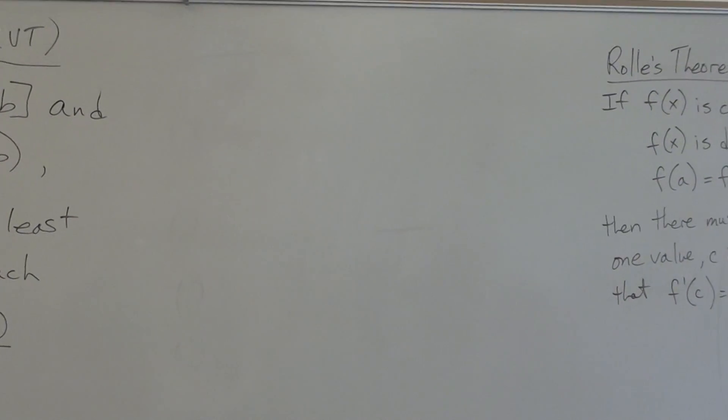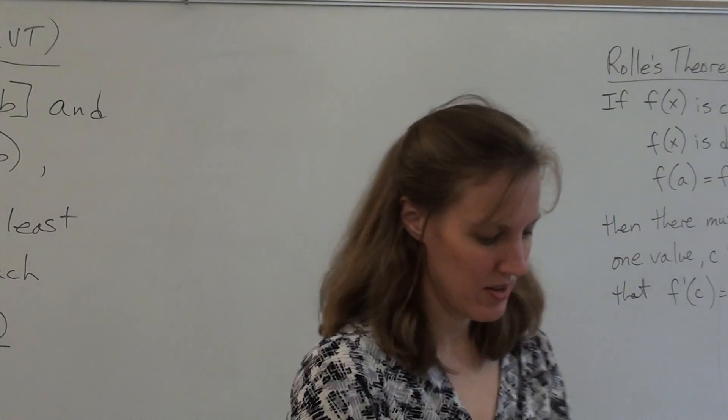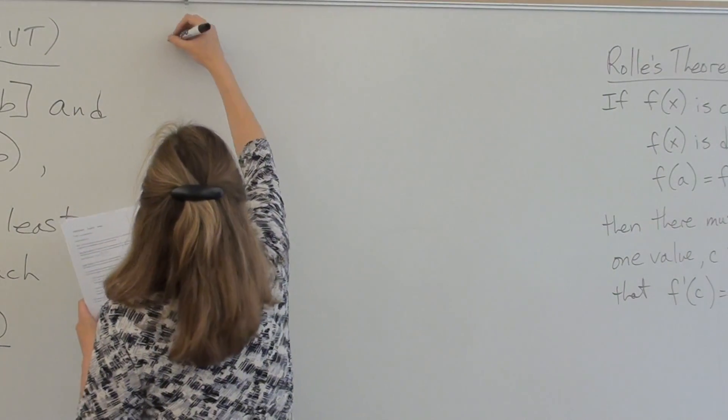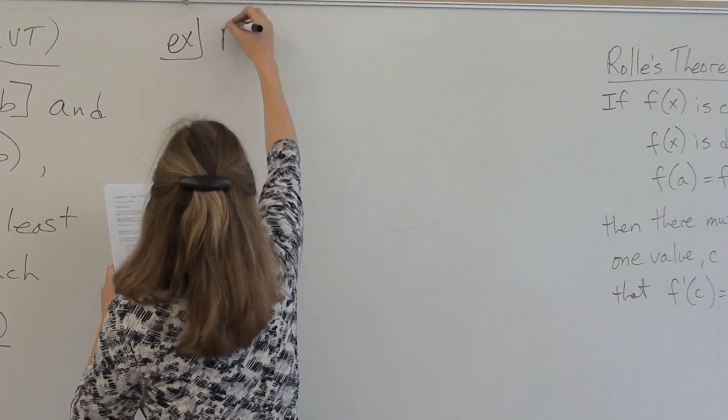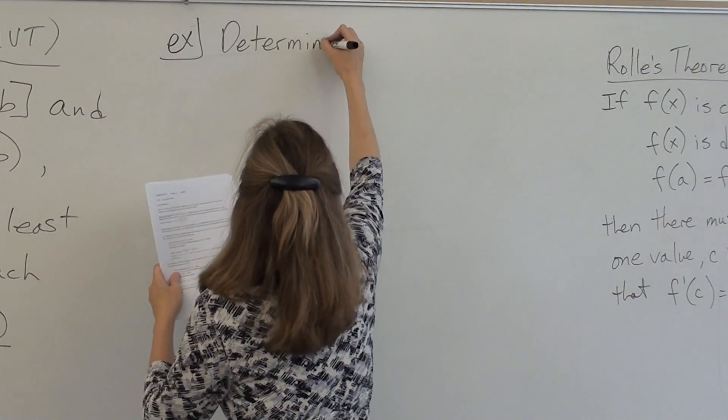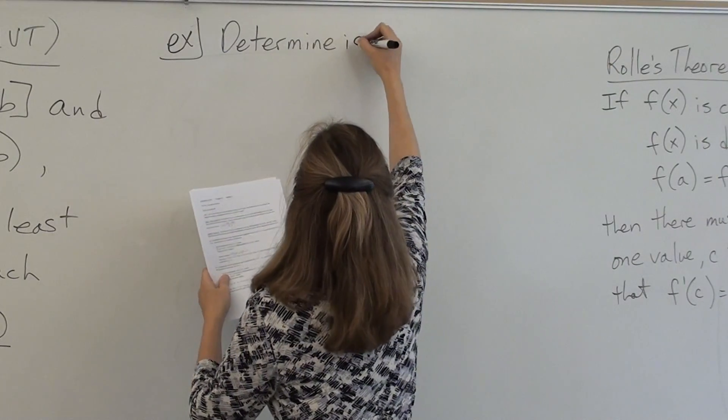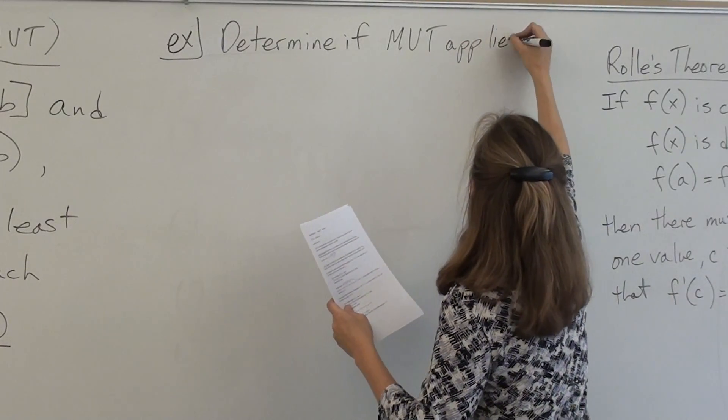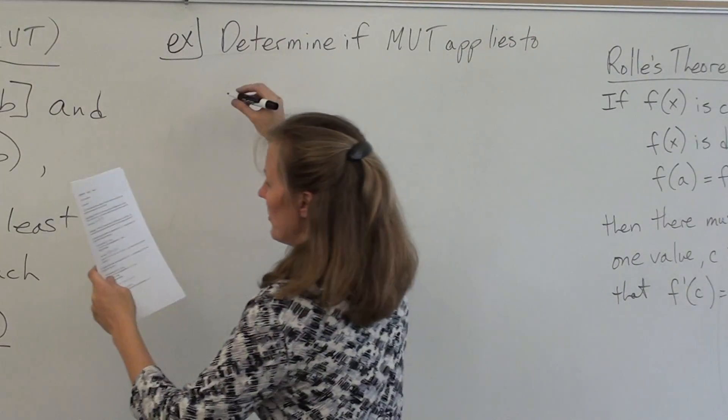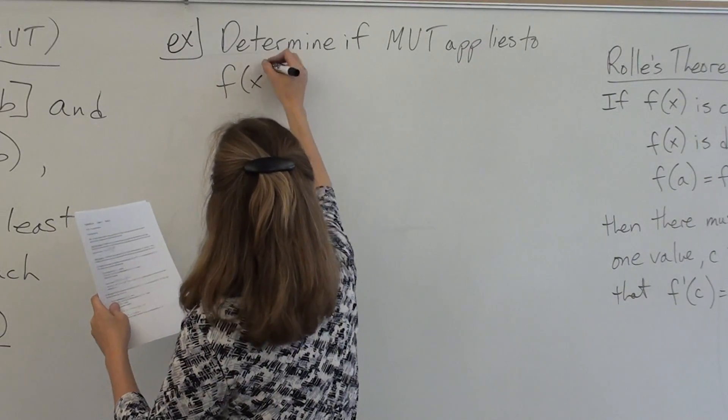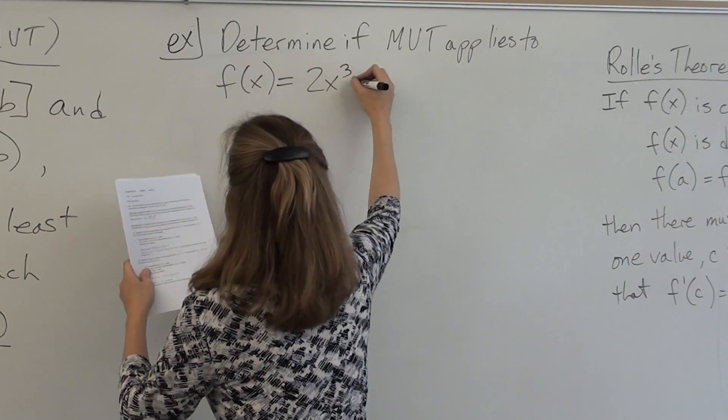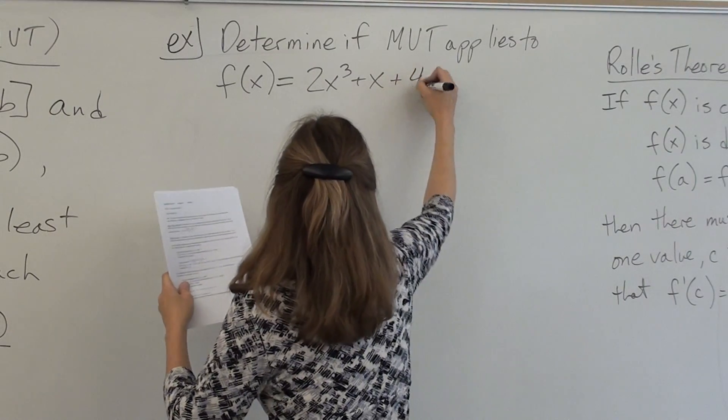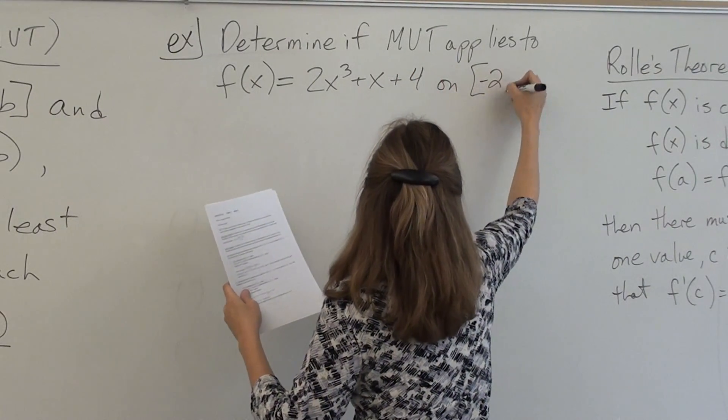First example. Determine if MVT applies to f(x) = 2x³ + x + 4 on the interval [-2,1]. If so, find C.